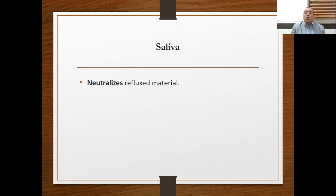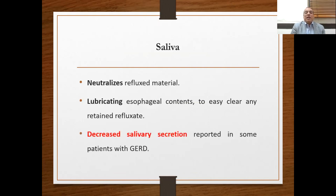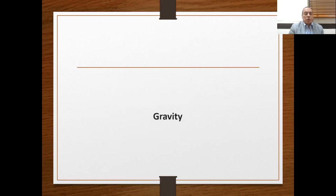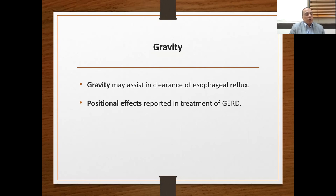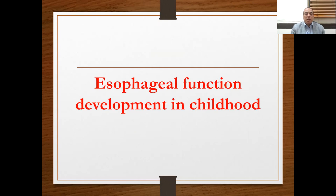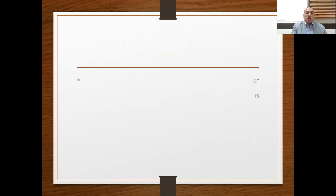Saliva neutralizes refluxed material and lubricates the esophageal content. Decreased salivary secretion has been reported in some patients with gastroesophageal reflux. The final item in esophageal clearance is gravity — gravity assists in clearing esophageal reflux. This is evidenced by the positional effect in treatment of gastroesophageal reflux, which is very important.